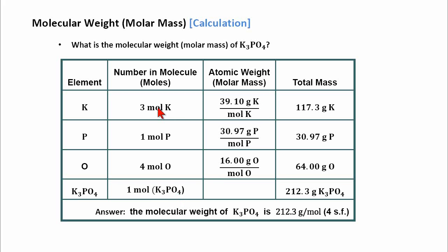The atomic weight for each of these elements is obtainable from the periodic table of elements, and we just simply look them up. And here they are for each of the three elements. Take the three moles times their mass and we get the total mass. When we add the total mass up, it adds up to 212.3 grams of potassium phosphate. So the molecular weight of K₃PO₄ is 212.3 grams per mole to four significant figures, and the significant figures are from the elements.